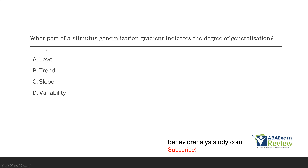Question eight. What part of a stimulus generalization gradient indicates the degree of generalization? A gradient is a visualization of how generalization is occurring. The options are level, trend, slope, or variability. The answer is slope. The steeper the slope, the more generalization. If the slope is relatively flat, generalization might be lacking. What part of a stimulus generalization gradient indicates degree of generalization? C, slope.